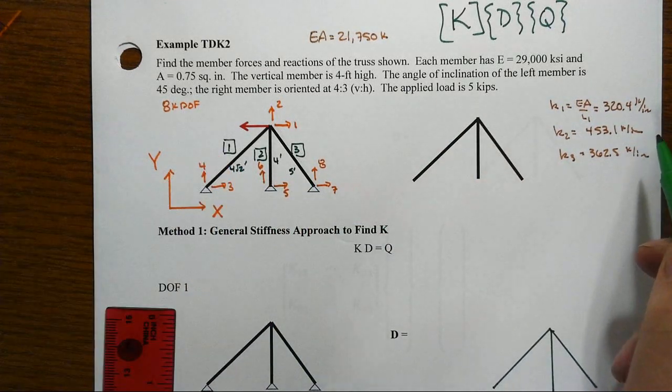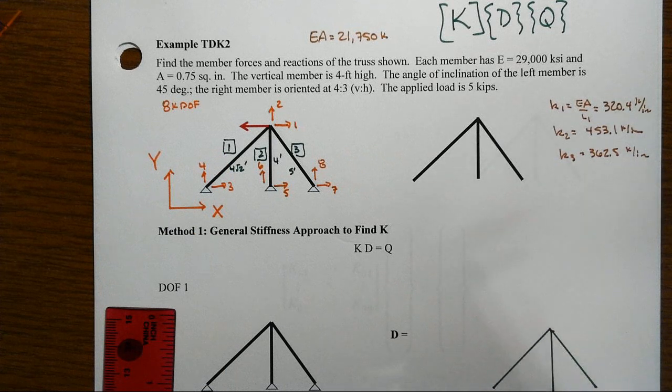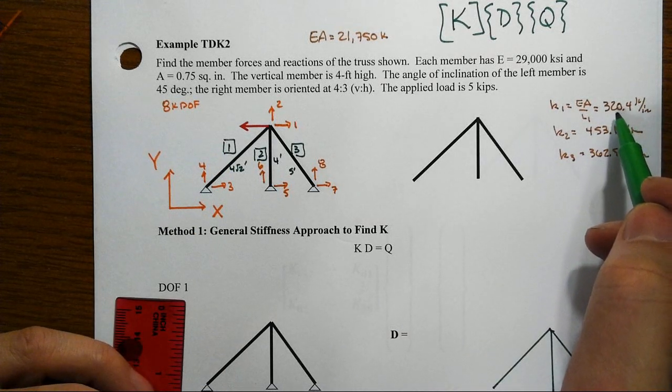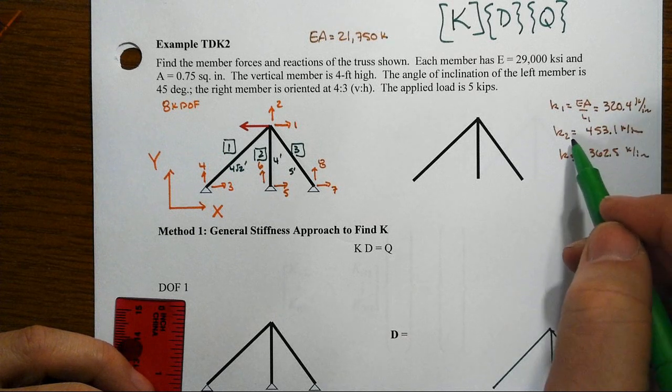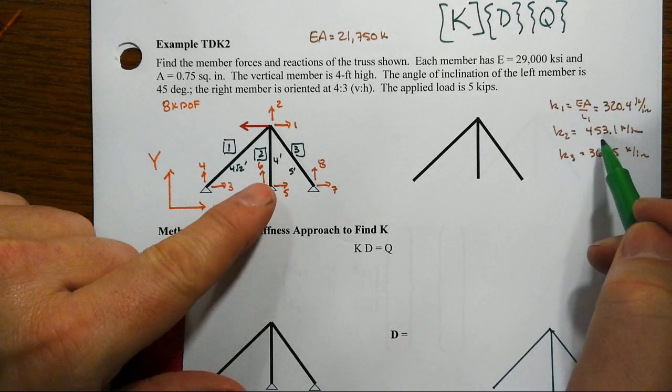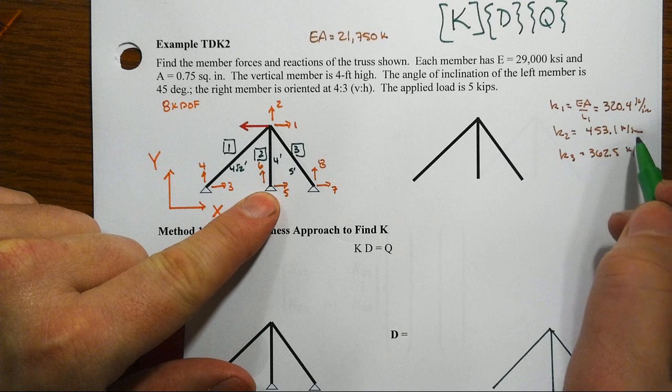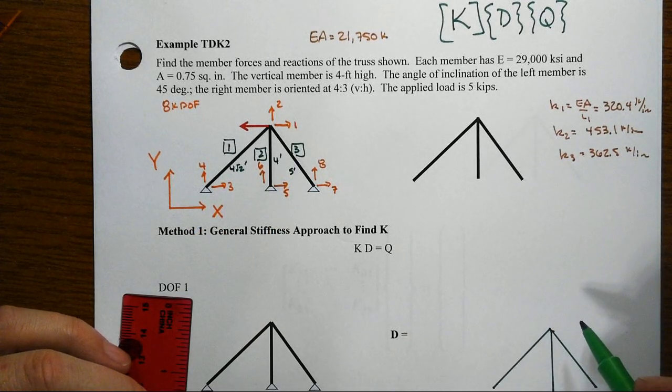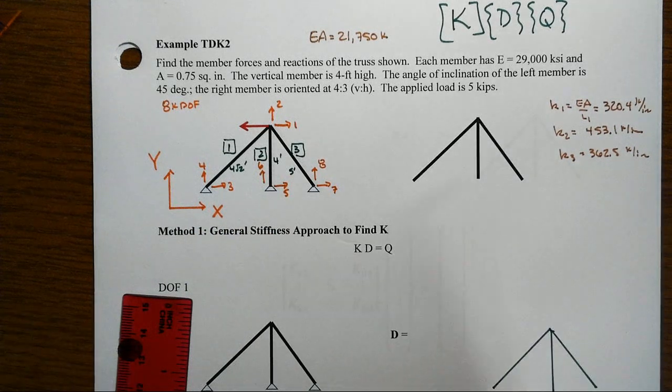All right, so the longest member is the one on the left. With everything else being the same, it should therefore be the most flexible. And that's what we see. It has the smallest stiffness, 320.4 kips per inch for that one. Axial stiffness of the middle member at 453.1 kips per inch. And axial stiffness of the right member at 362.5 kips per inch.